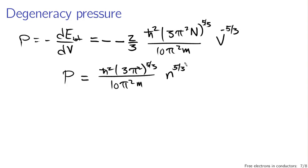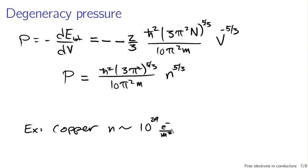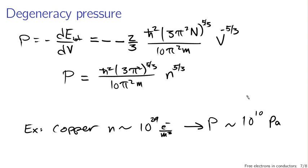For example, putting some numbers on this: for copper, the free electron density n is something like 10 to the 29th electrons per cubic meter — a very large number. Everything else is physical constants: h-bar, pi, and m being the mass of the electron. If you plug in the numbers, you'll find the pressure under these circumstances is something like 10 to the 10th Pascal, which is about five orders of magnitude higher than Earth's atmospheric pressure of about 100,000 Pascal. So this is a big number, but a big number is to be expected since we're talking about solids.